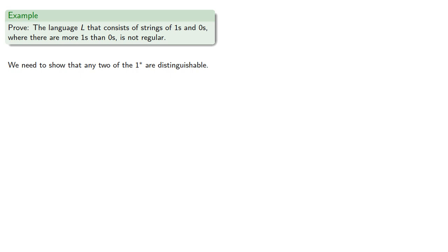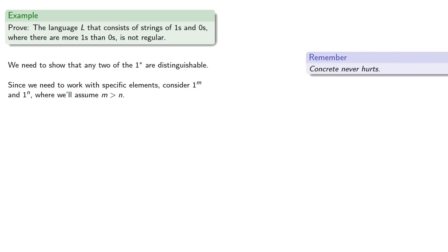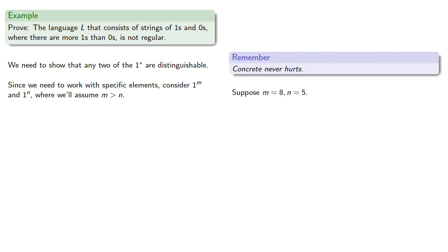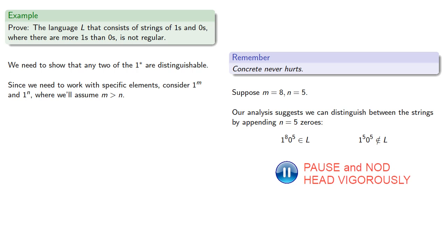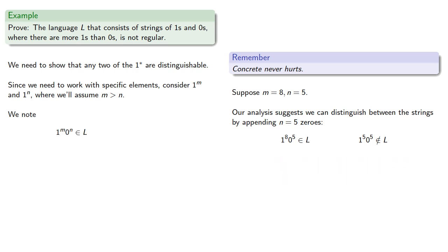We need to show that any two strings of 1s are distinguishable. Consider 1^m and 1^n where m is greater than n — for concreteness, suppose m is 8 and n is 5. We can distinguish between the strings by appending n zeros: 8 ones followed by 5 zeros is in our language, but 5 ones followed by 5 zeros is not. So in general, appending n zeros puts the first string in our language but not the second, meaning 1^m is distinguishable from 1^n.